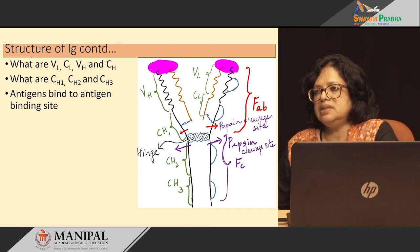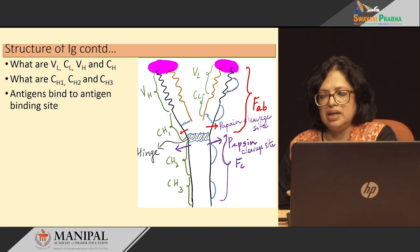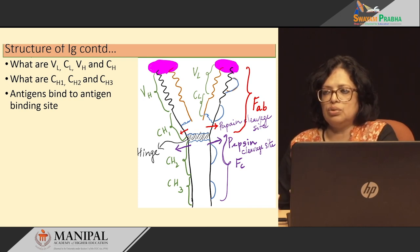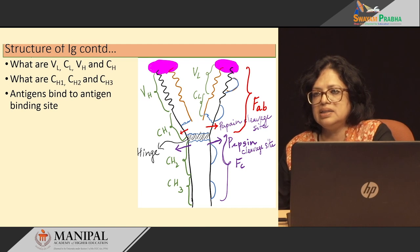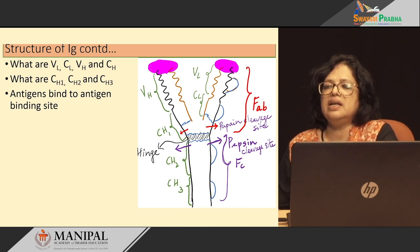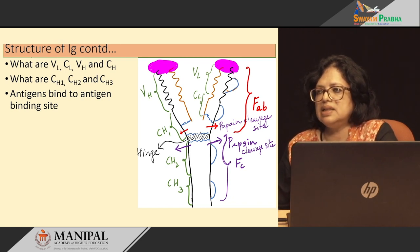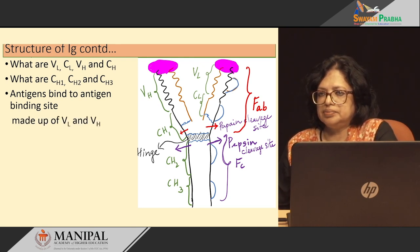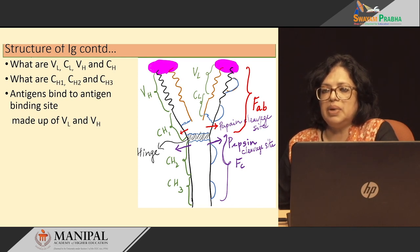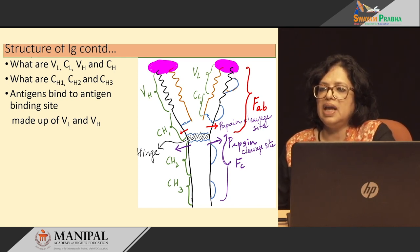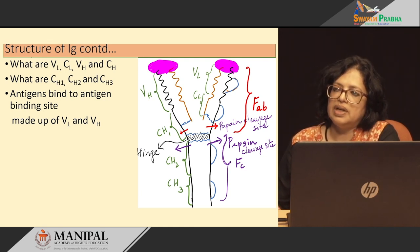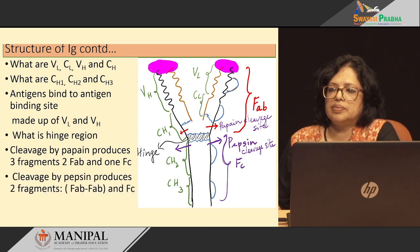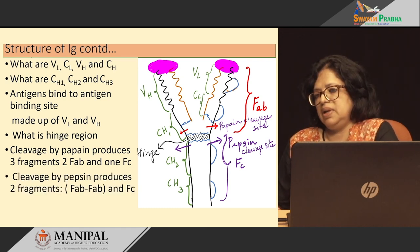Where do the antigens bind? The whole purpose of having immunoglobulin in blood is to bind to antigens which might have been contributed by any virus or bacteria. The immunoglobulin will bind to the antigen at regions indicated in purple globules, so two antigens can be bound by one immunoglobulin molecule. This antigen binding site is made up of the VL and the VH of the immunoglobulin.